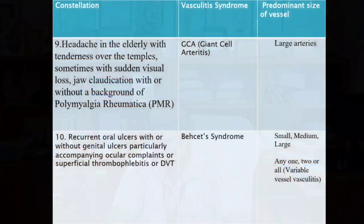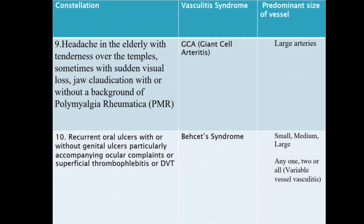Headache in an elderly patient with tenderness over the temple, sometimes with sudden visual loss, jaw claudication, with or without a background of polymyalgia rheumatica — this is giant cell arteritis. The predominant cell size of vessel is large arteries. Another constellation: recurrent oral ulcers with or without genital ulcers, particularly accompanying ocular complaints or superficial thrombophlebitis or DVT — this is Behcet's syndrome. Small, medium, or large vessels can be involved — any one, two, or all variable.